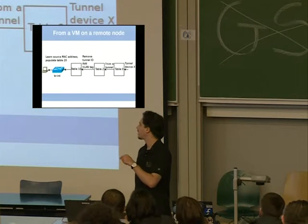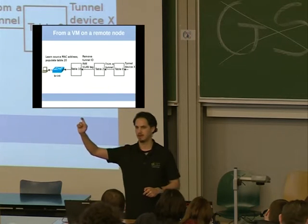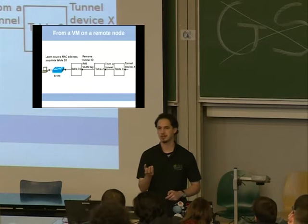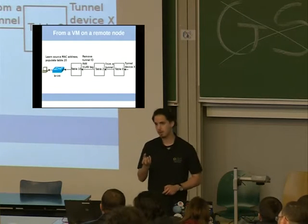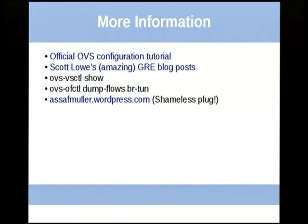We drop the tunnel headers — all the GRE or VXLAN stuff — and we convert the tunnel ID to the VLAN ID, because the local BR int is still using VLANs to mark specific networks. For more information, I have a blog with this entire thing written out verbally. If you didn't catch something I said, you can read everything with examples there. Scott Lowe — the big guy in networking — has an amazing blog about everything as well.